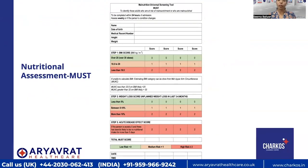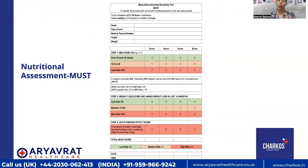The MUST chart — the Malnutrition Universal Screening Tool — is used for nutritional assessment. In this station you will calculate the patient's BMI and score it accordingly. In step two you will assess the percentage of weight loss and record it on the MUST chart, and also consider acute disease effect and whether it is relevant. Once all three steps are done, you calculate the total MUST score, decide the patient's risk of being malnourished, give recommendations accordingly, and complete the chart with date, time, and signature.